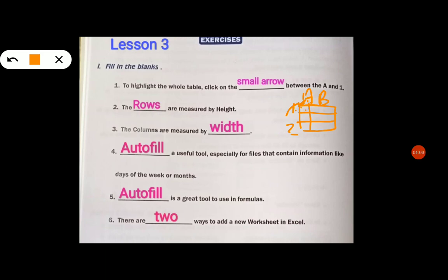Remember properly: columns are measured by width. Column, and that, this is the column. So this is width. Row is height, column is width. Autofill is a useful tool that is used for files containing information like days of the week or months that will automatically fill.